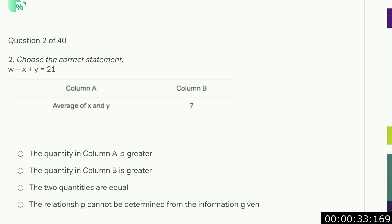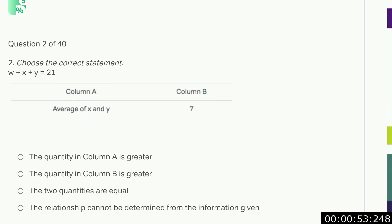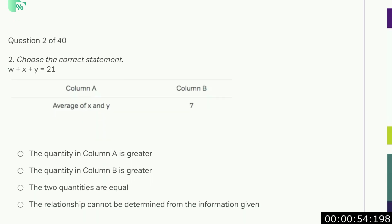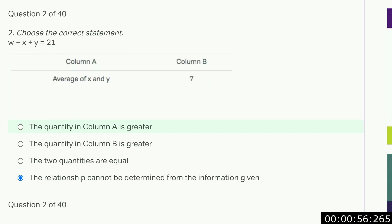Choose the correct statement. W plus x plus y equals 21. The average of x and y — well, we don't know, because we don't know w. W could be like 21 making x and y 0, or w could be like 1 making x plus y 20. So we don't know which is bigger because we don't know anything about w. So D.